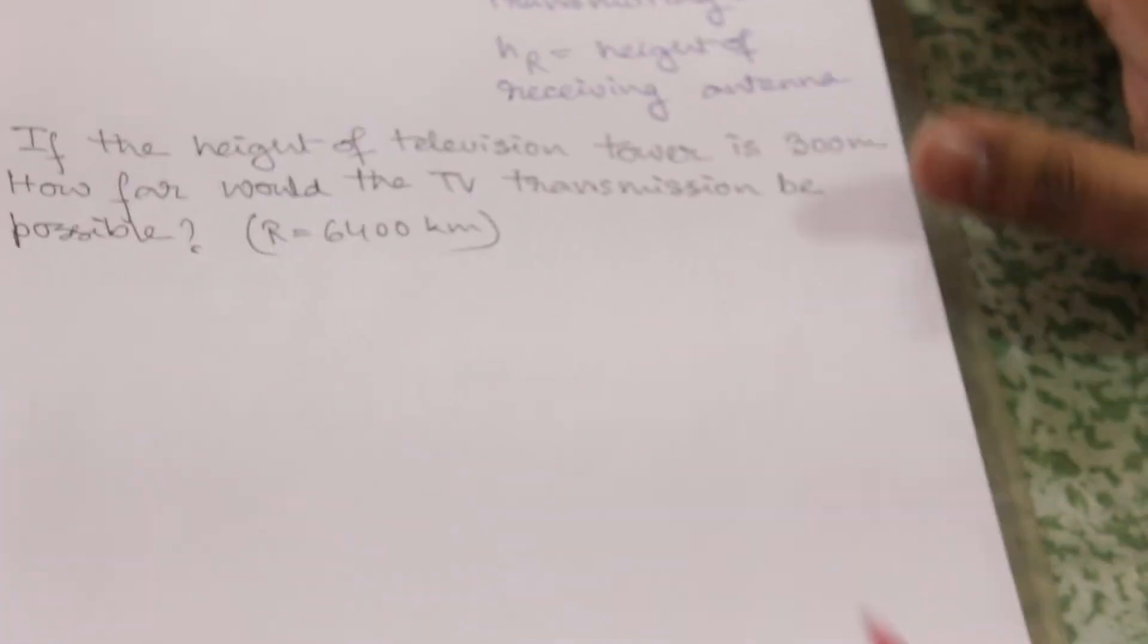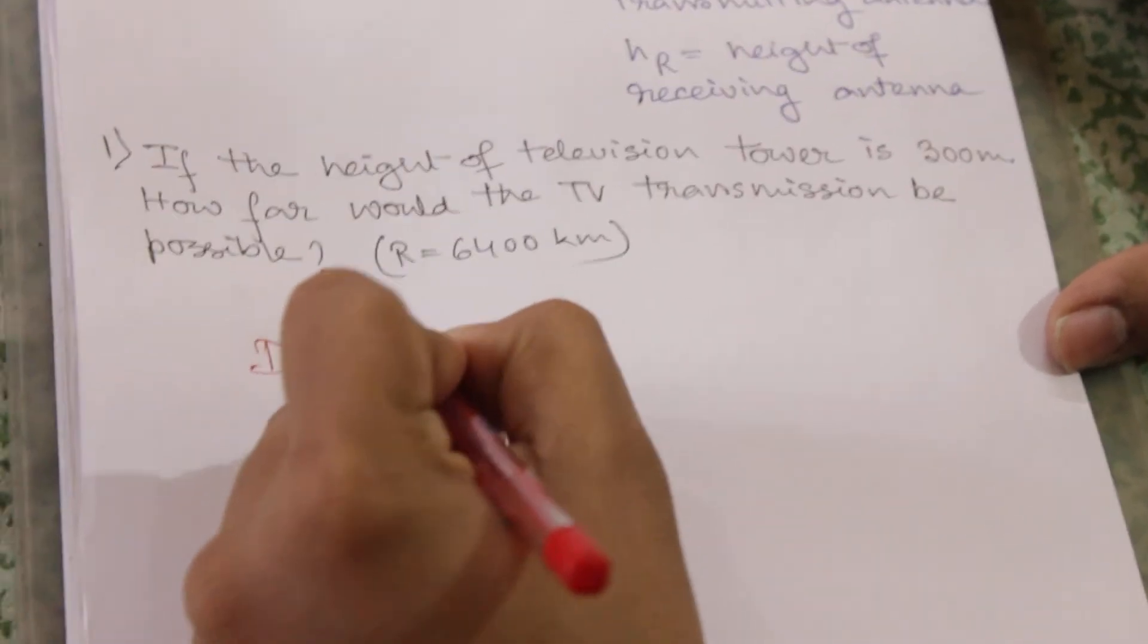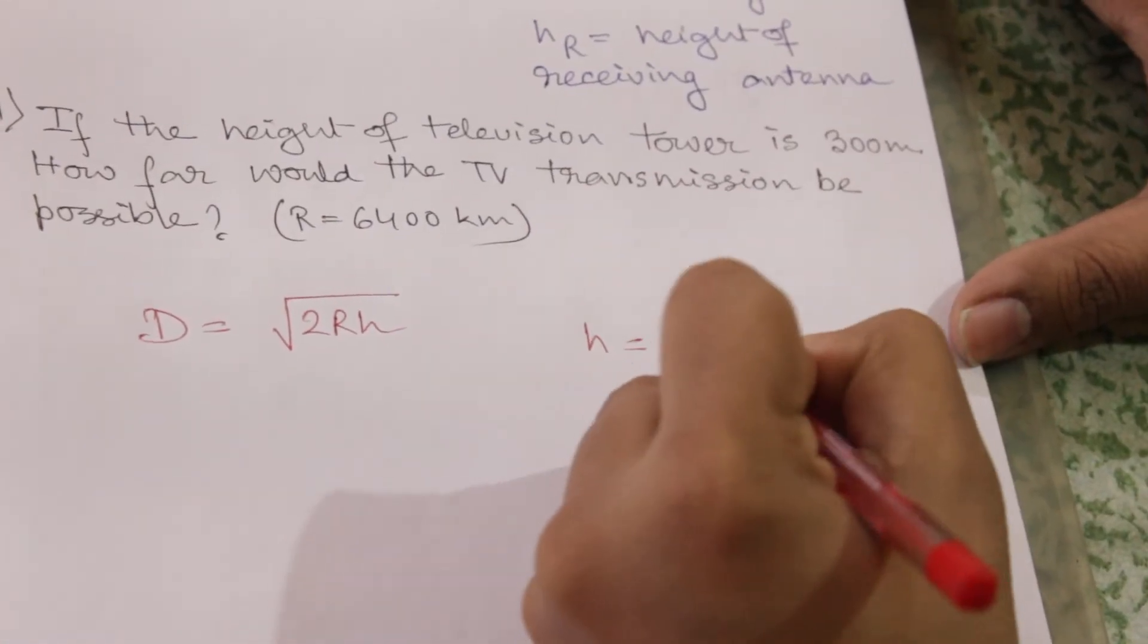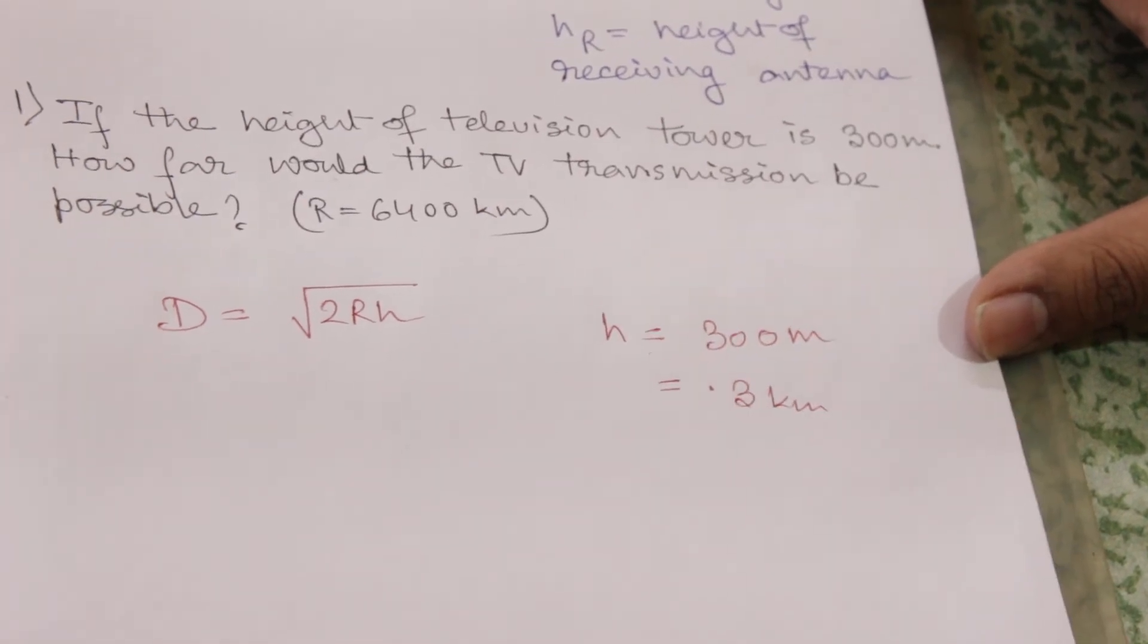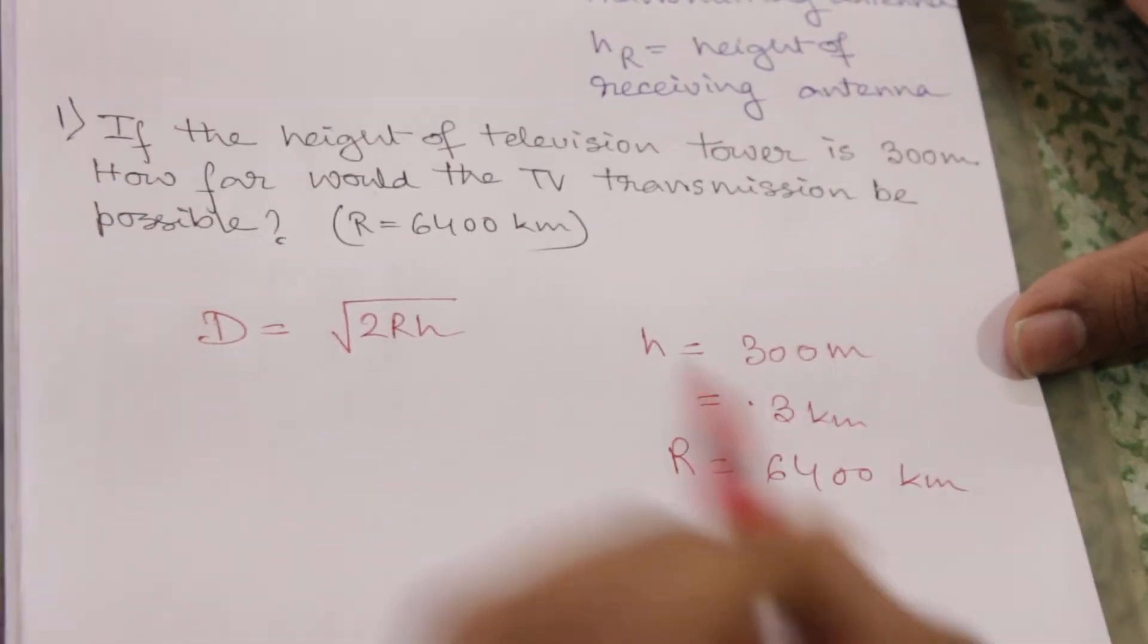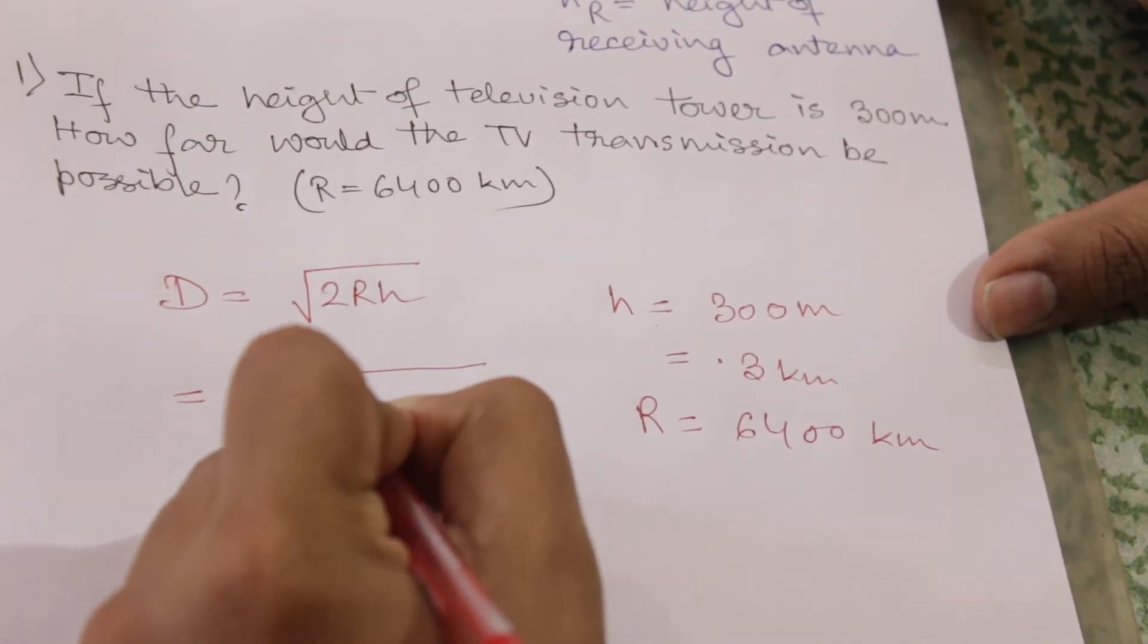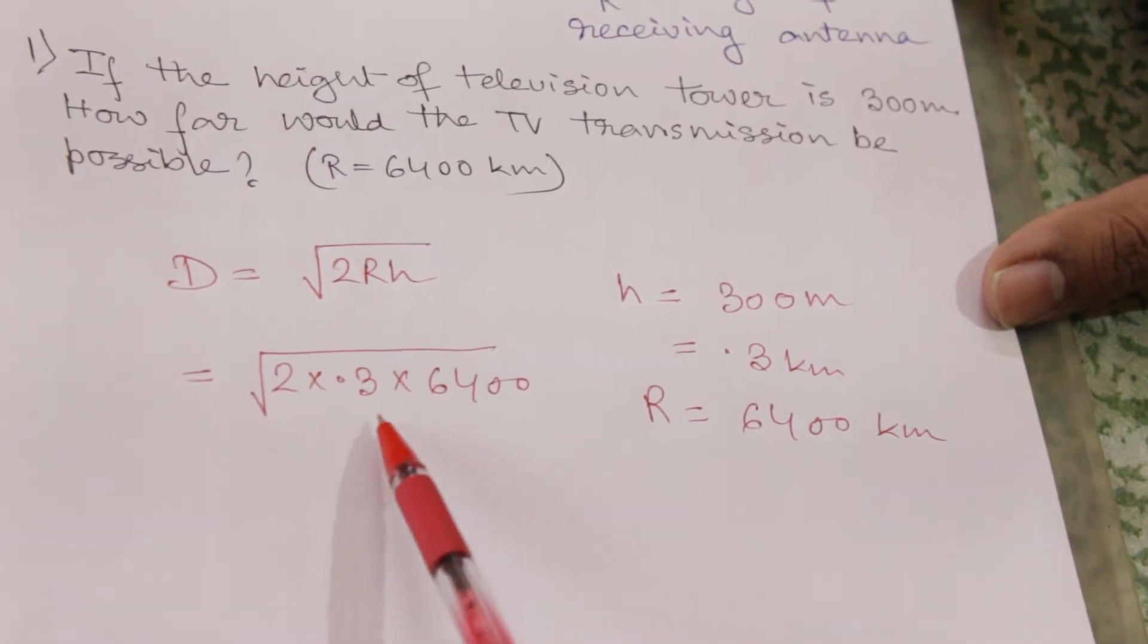So we will use formula number 2, that is D equal to root over 2Rh. h is equal to 300 meters, which is equal to 0.3 kilometers. Radius of the earth is given as 6400 kilometers. So we will put this value here: 2 into 0.3 into 6400. This is the h and this is the R.